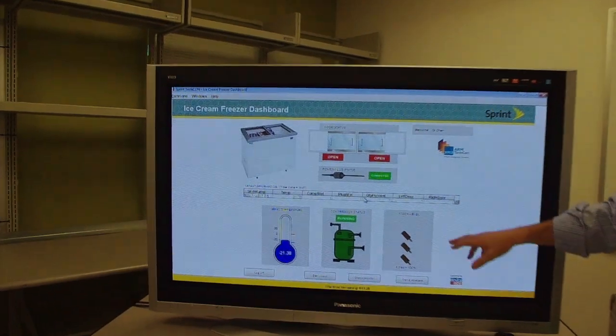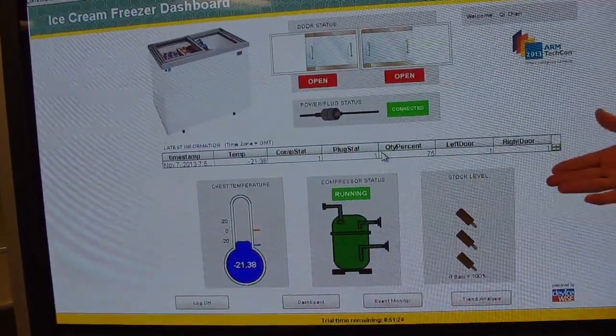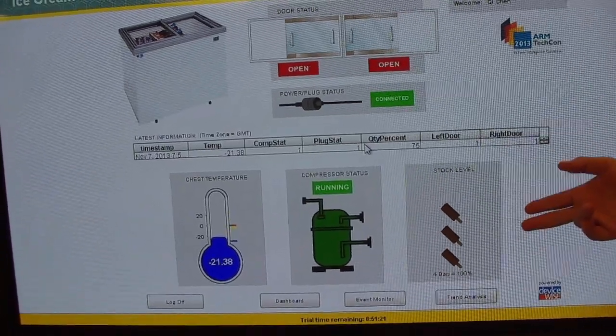What you'll notice is we saw it go completely away because I was blocking the sensor, and now the sensor is getting an accurate read and we see the inventory went from four down to three.